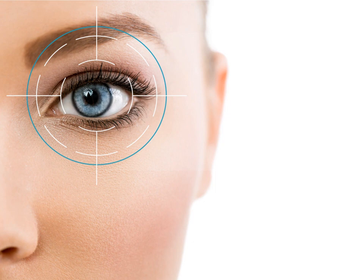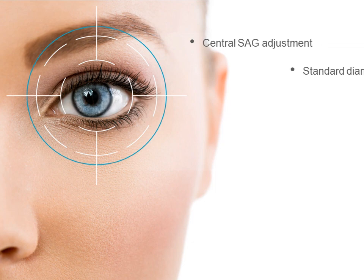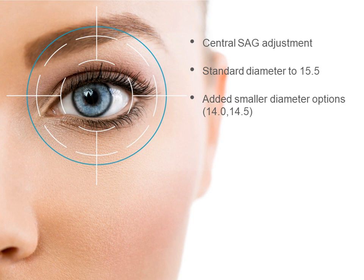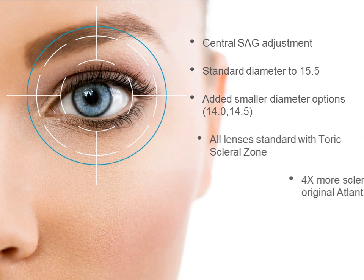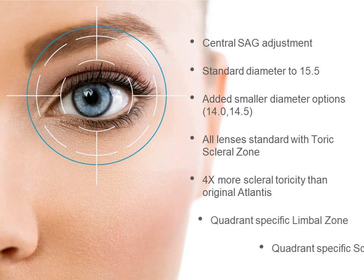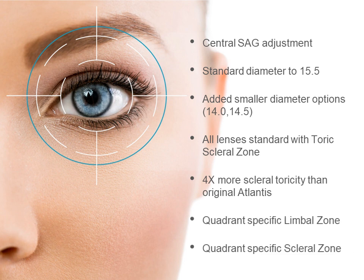Among the enhancements are independent sag adjustments, a slightly larger 15.5 mm standard lens diameter, and smaller diameter options for normal corneas. All lenses come with standard toric scleral zones with significantly more toricity now available. The limbal zone and scleral zones are also customizable with quadrant-specific adjustments and are fully independent.